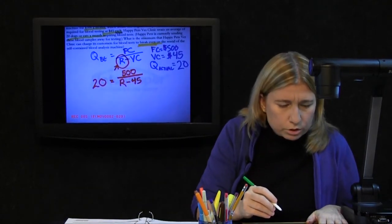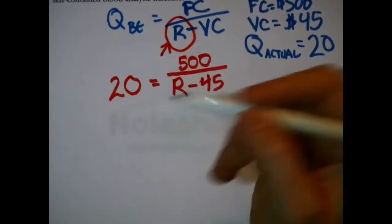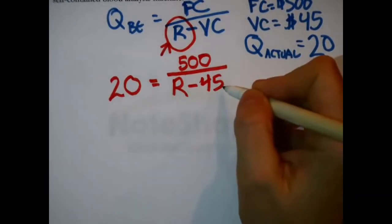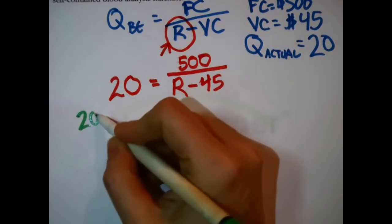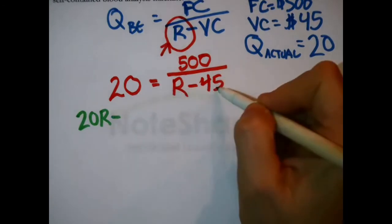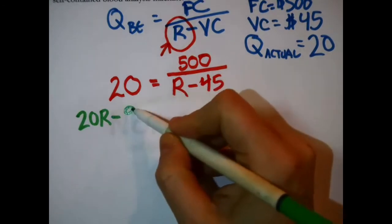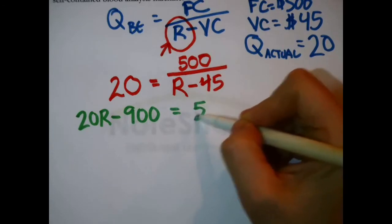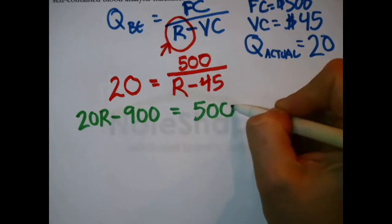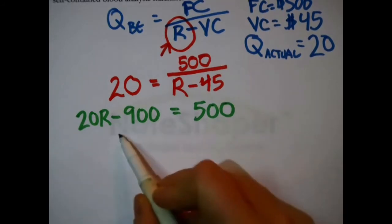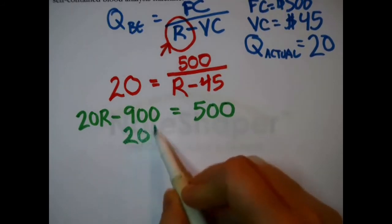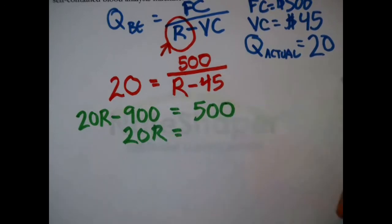Now, all we need to do is just a little bit of algebra. I'm going to multiply both sides by R minus 45. Over here, I'll get 20R minus, let's see, 20 times 45 is 900. And why did I do that? Because it was annoying me over there in the denominator. And over here, now it cancels out. And then I can consolidate these two terms. So, 20R equals, I'm going to add 900 to both sides. Disappears from here, crops up over here. It's 1,400.